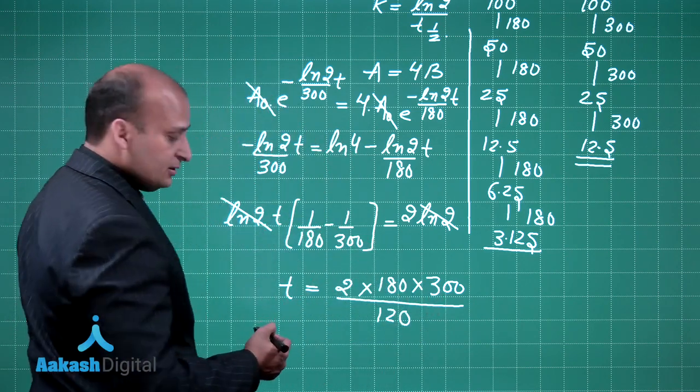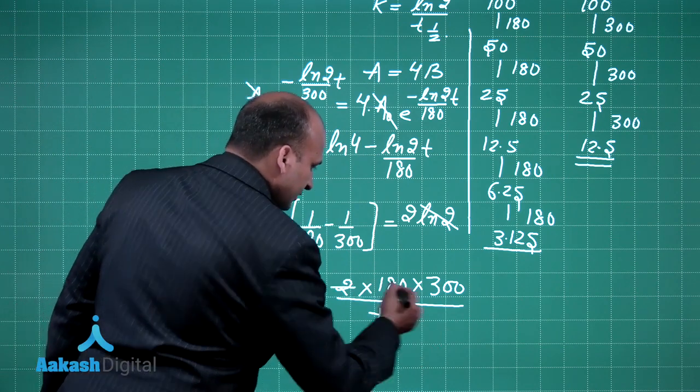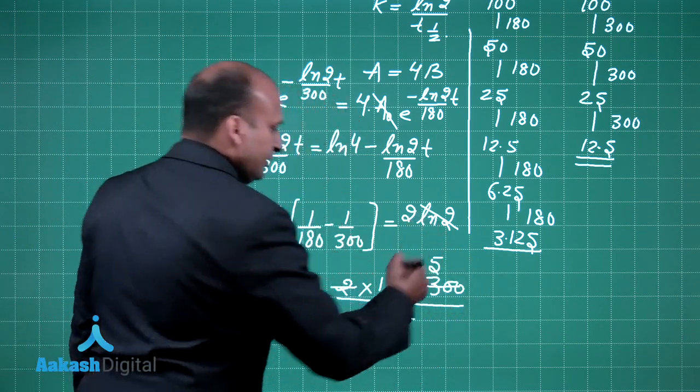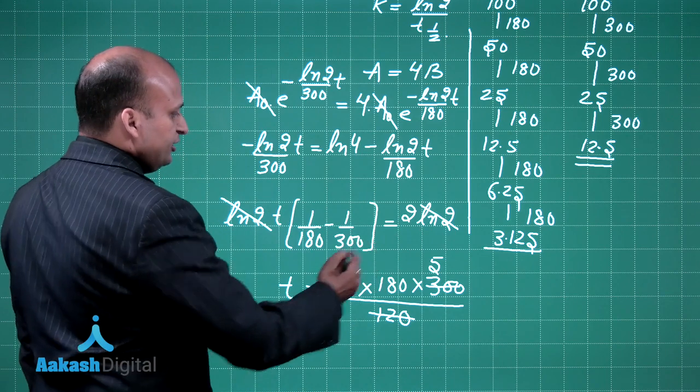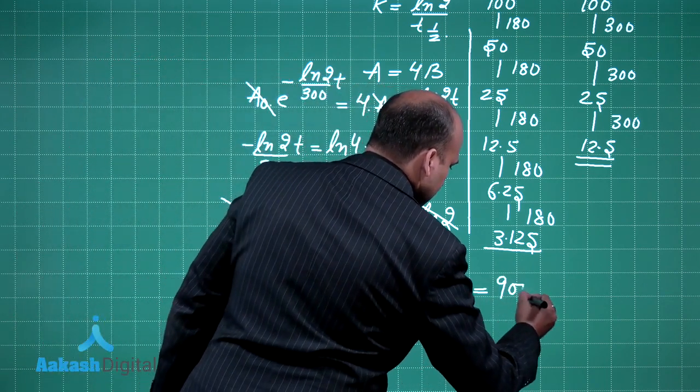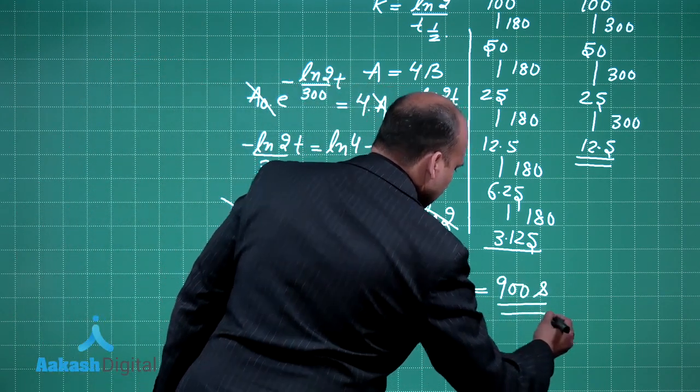See there is 2 multiplied by 180 multiplied by 300 divided by 300 minus 180 which is 120. Now see 2 into 300 is 600. So 120 into 5 is 600, 180 into 5 is 900 seconds, ok dear friends.